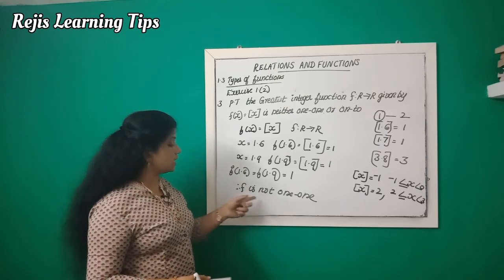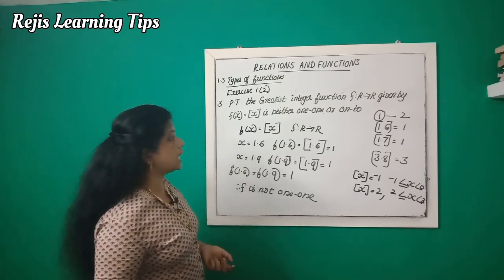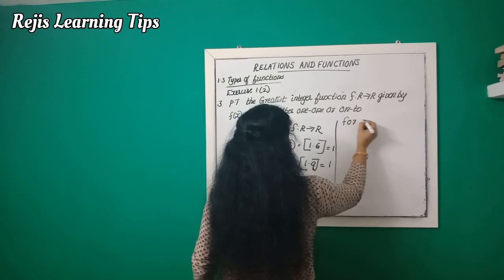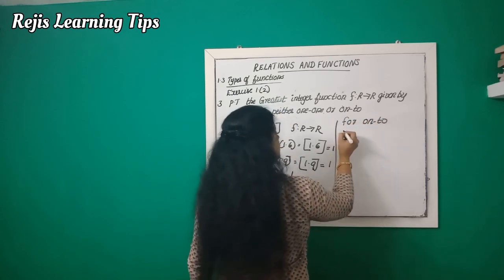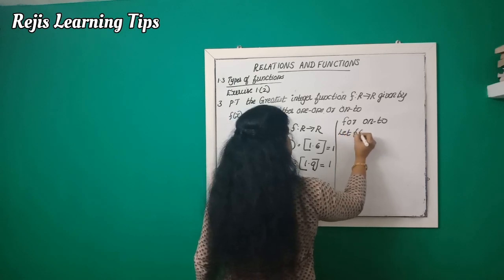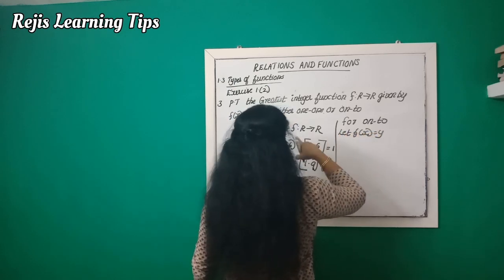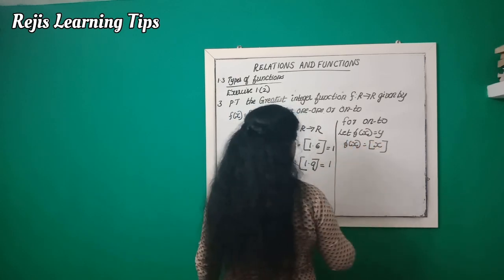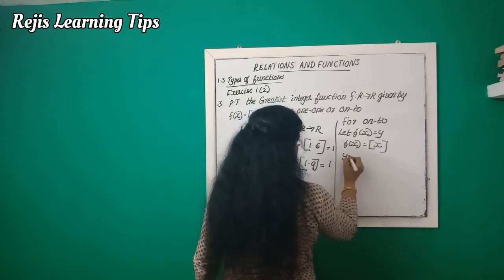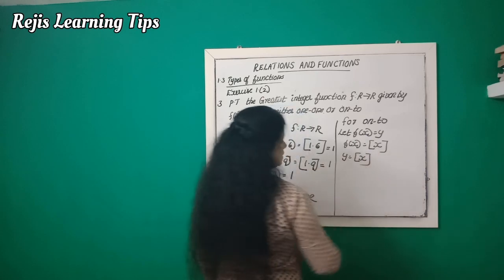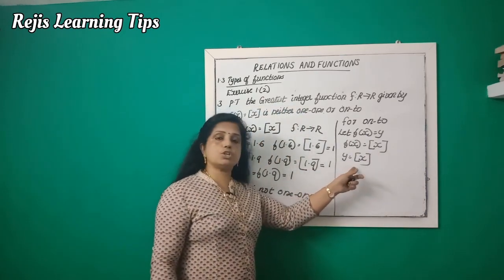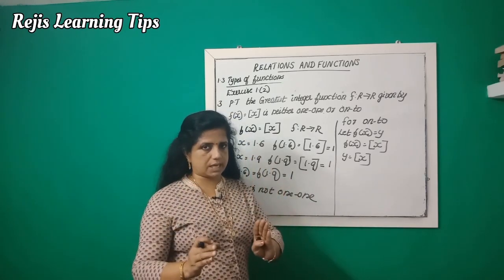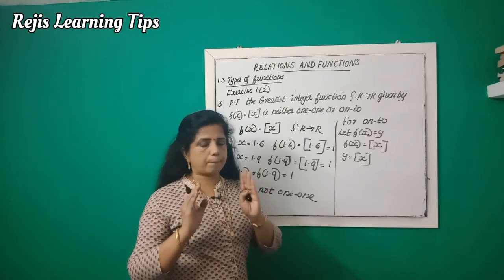Now let's check if the function is onto. For onto, let f(x) = ⌊x⌋, so y = ⌊x⌋ where x belongs to R. We need to check whether every element in the codomain has a pre-image.